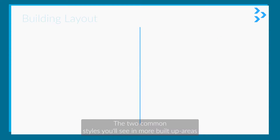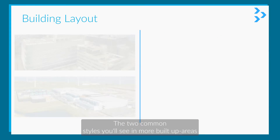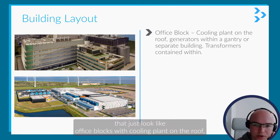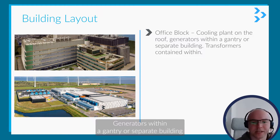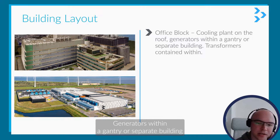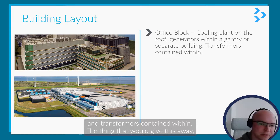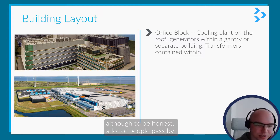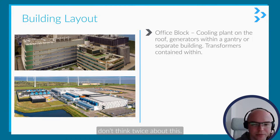The two common styles you'll see in more built-up areas: they'll just look like office blocks with cooling plant on the roof, generators with a gantry or separate building, and transformers contained within. The thing that will give this away if you're walking by is you'll notice there's no windows — although a lot of people pass by and wouldn't think twice about it.